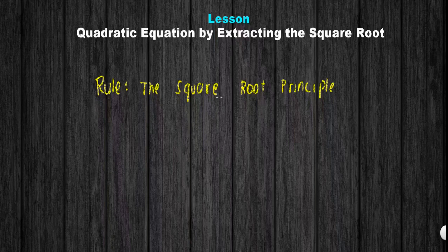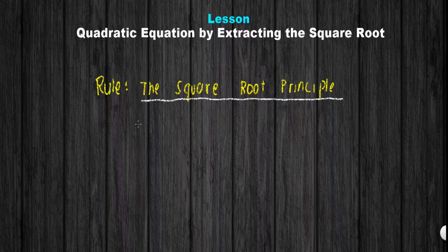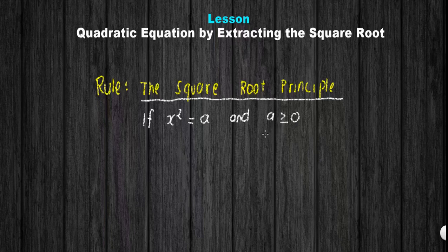In this lesson, I am going to show you how to extract the square root in a quadratic equation. First, let's have our rule that we need to follow — the square root principle. The square root principle states that when our given is x squared equals a, and a is greater than or equal to 0, then x can be the positive or negative square root of a.